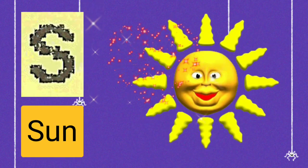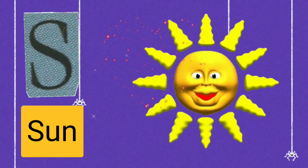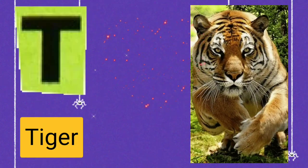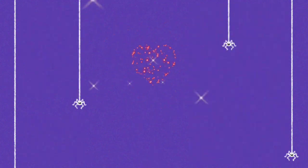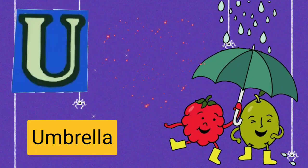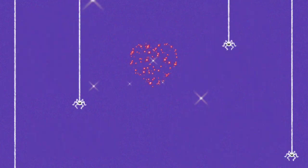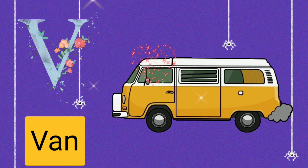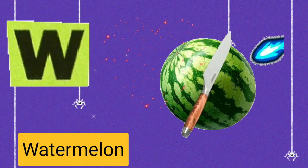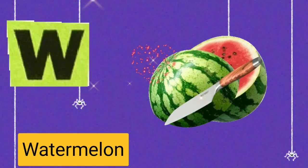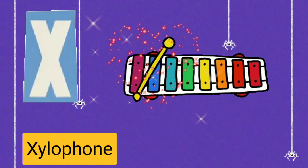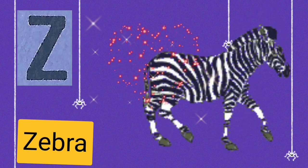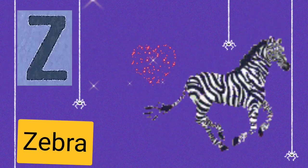S for sun, T for tiger, U for umbrella, V for van, W for watermelon, X for xylophone, Z for zebra.